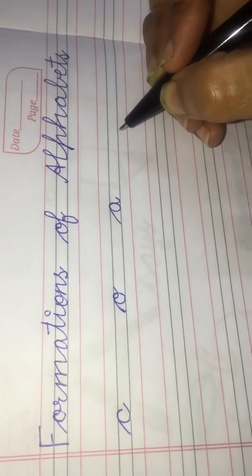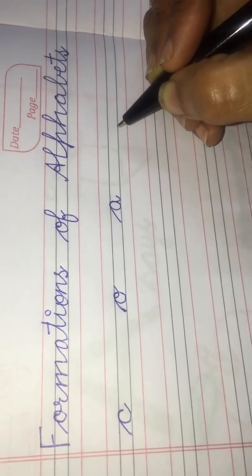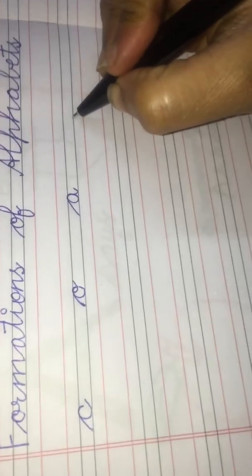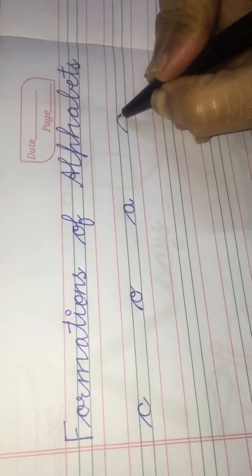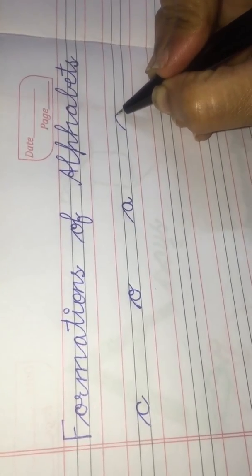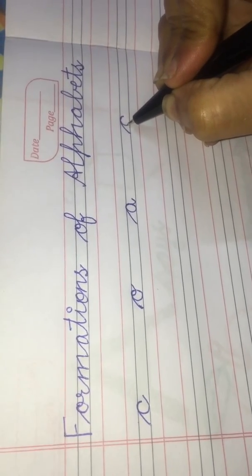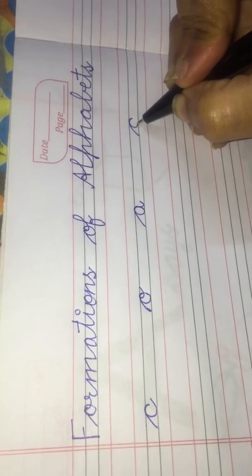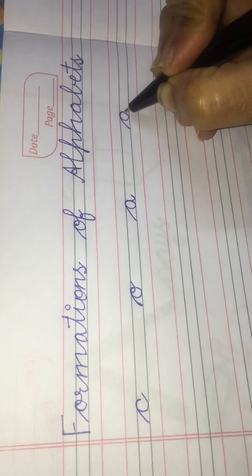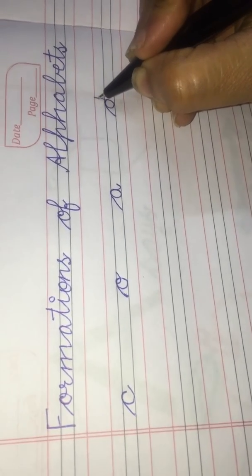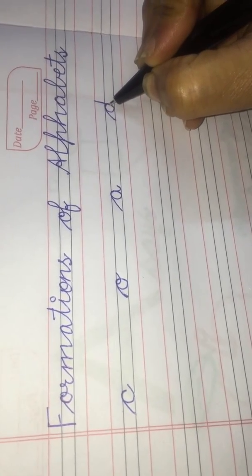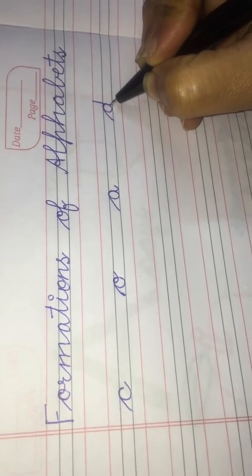Now we will make letter D. Start from the third line. Make a slant line, come down, touch the third line again, go up, touch the red line like this.